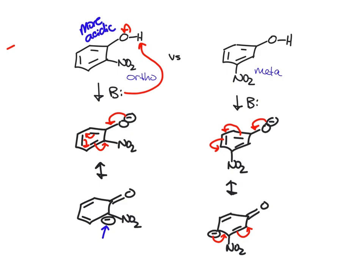If you did the same thing for the para-nitro, you would be able to draw a resonance structure that puts the negative charge directly next to the nitro group.